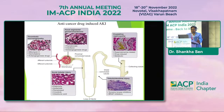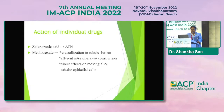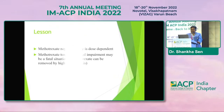Anti-cancer drugs cause AKI by various mechanisms. In Scenario 4, a 45-year-old lady with rheumatoid arthritis on methotrexate received zoledronic acid for severe osteoporosis and developed acute tubular necrosis. Zoledronic acid is known to cause ATN, and on the background of methotrexate use the kidney is already challenged. The lesson: methotrexate nephrotoxicity is dose-dependent, methotrexate with renal impairment can be a fatal situation, and it can be removed by high-flux dialysis.